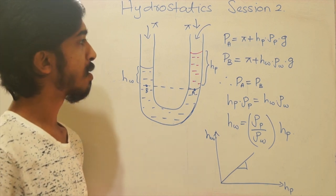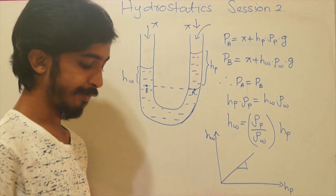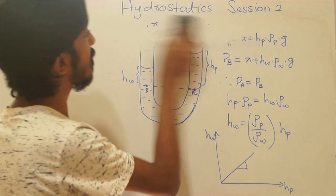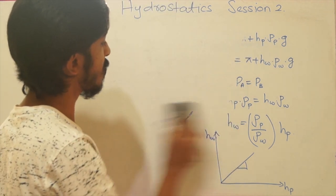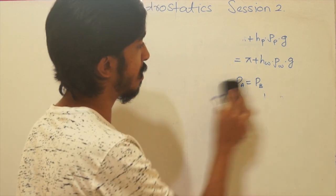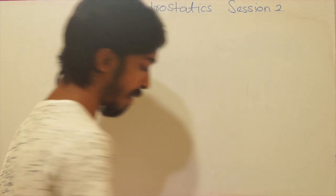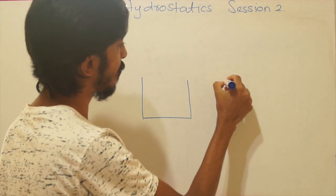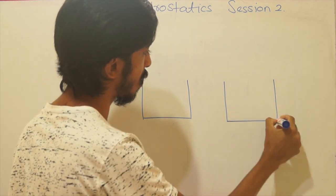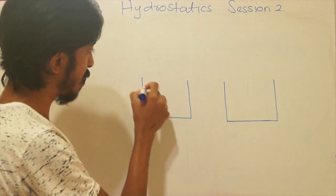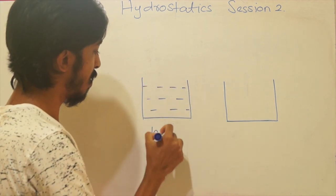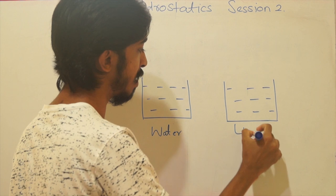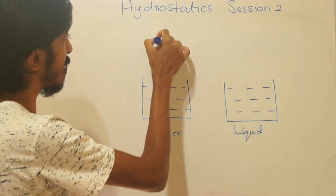There is a similar experiment called Hare's apparatus. The concept is the same but the setup is different. We use two liquid jars — one with the standard solution, say water, and another with the liquid of unknown density.